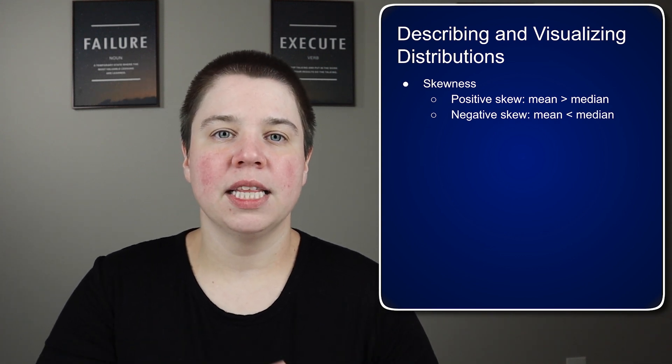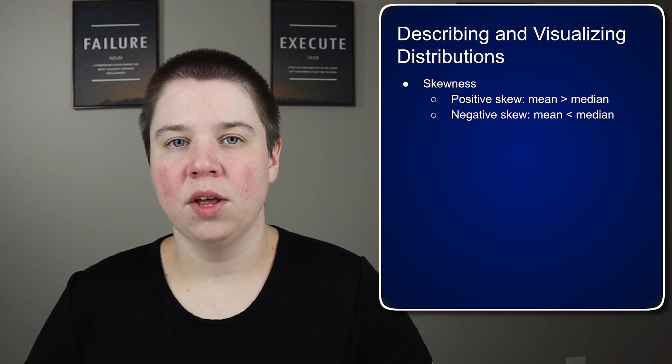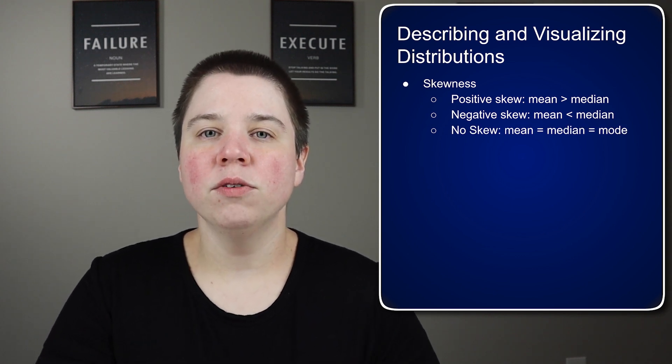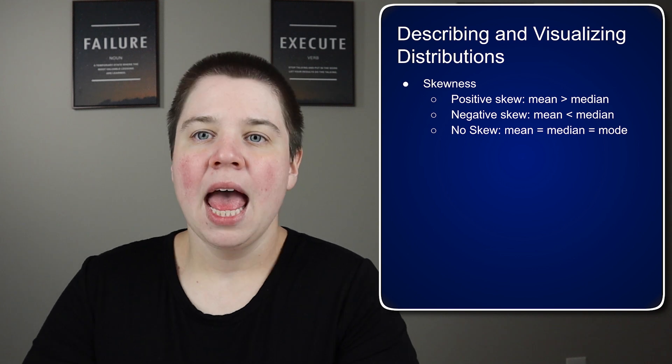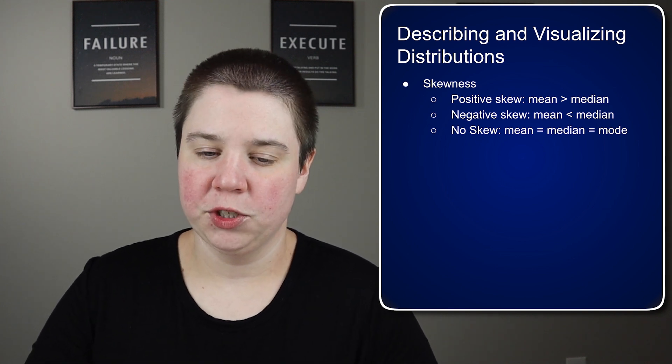A negative skew is the opposite of this. It means your mean is lower than your median. And no skew means that your mean is equal to your median, which is equal to your mode. This is typically defined as a normal distribution.